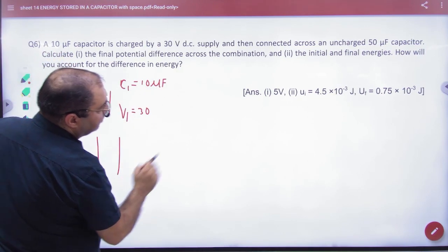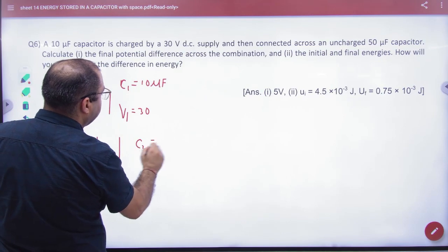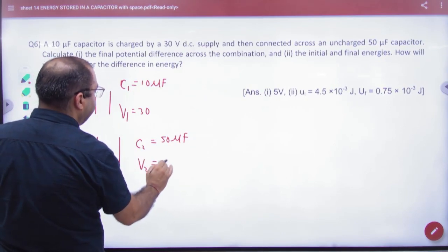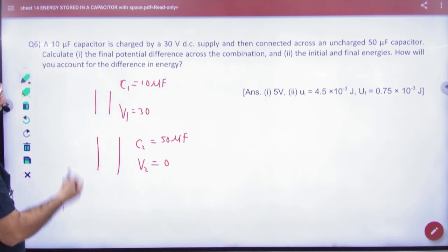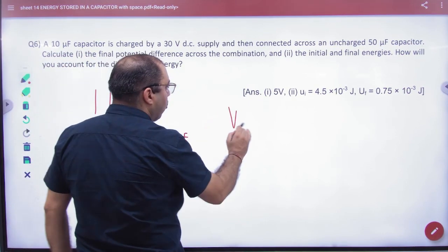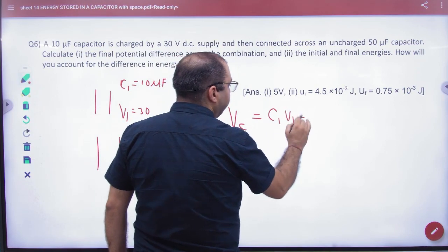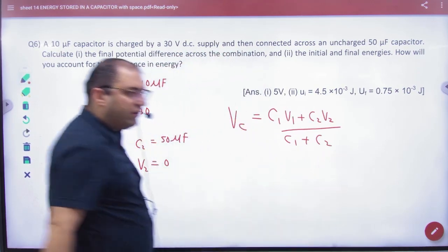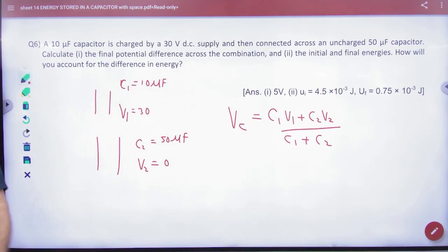Next capacitor uncharged, C2 = 50 microfarad, and uncharged, V2 = 0. Calculate the final potential difference across the combination. So we will take out common potential: Vc = (C1V1 + C2V2) / (C1 + C2). Solve this, answer comes out.